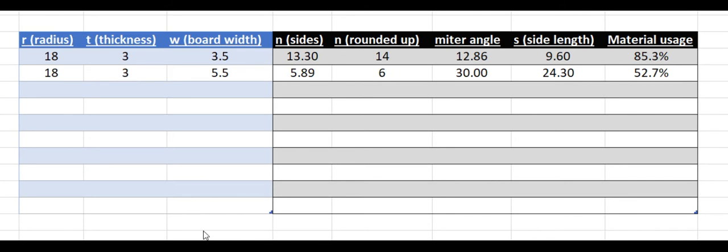If we wanted to try to get that efficiency really high, then we can use a board width that's very close to the thickness of the ring that we're trying to build. So if I did a five inch thick ring and use 5.1 inch boards, we would have to do a ton of sides, 36, but we're using 98% of the material.